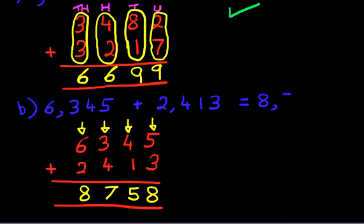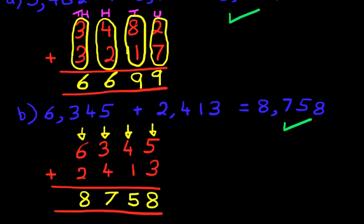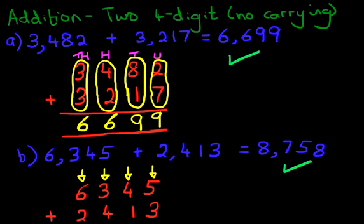8,758. That is correct. And let's scroll back up. That is how we do addition of two four-digit numbers with no carrying using the vertical format.